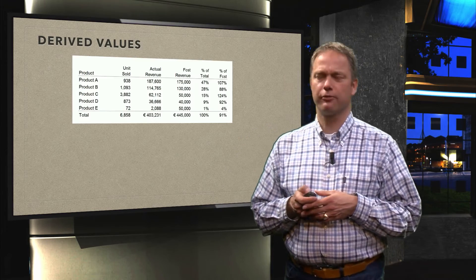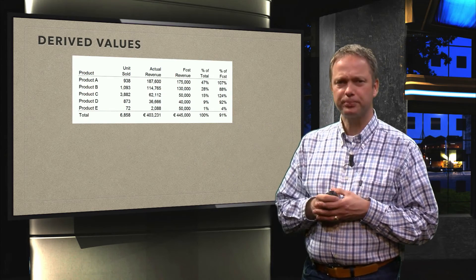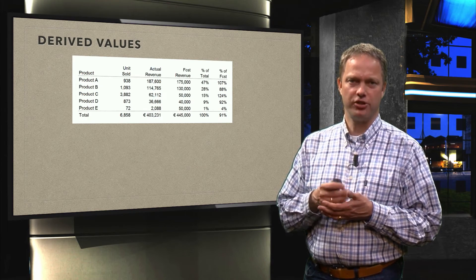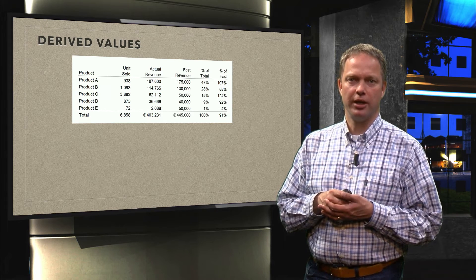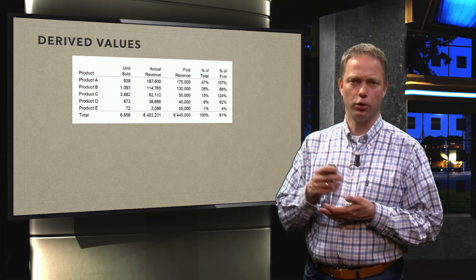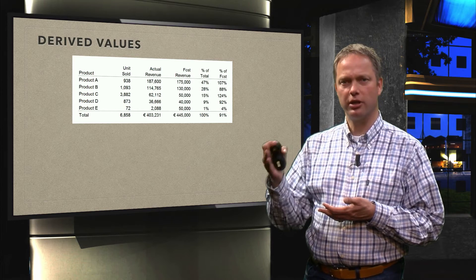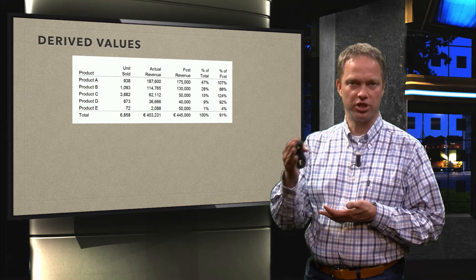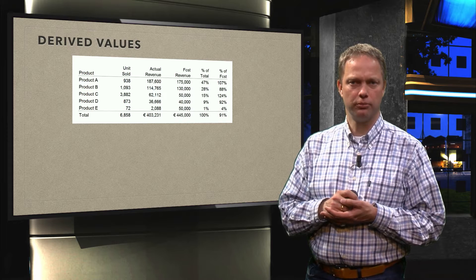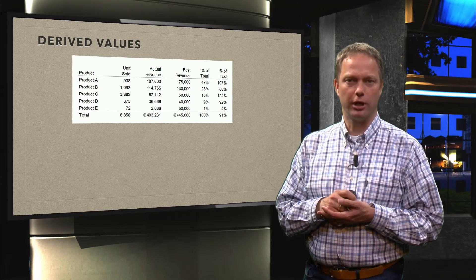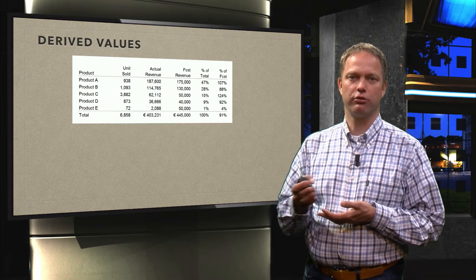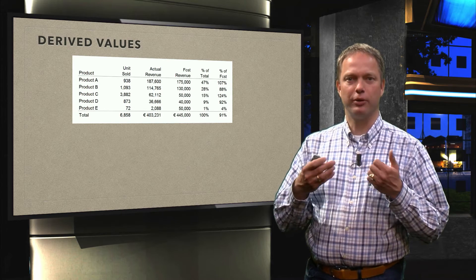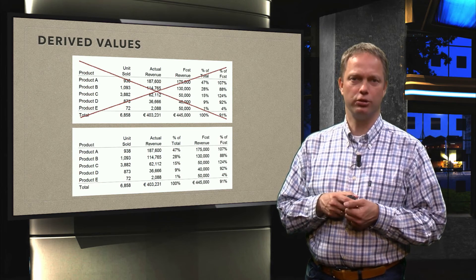So what about derived values? Let's have a look at this table. What we see is we see the different products and we see the units we have sold, and we see the revenue that was generated by these products. And we also have some kind of forecast. And then we have two columns that are actually calculations of the earlier columns. So we have a percentage of total and in this case it is the percentage of total of the actual revenue. And we have as a percentage of forecast which is actually the actual revenue as a percentage of the forecast. Now you already can see that the way I have to explain it, this is not really clear. So we shouldn't do this.